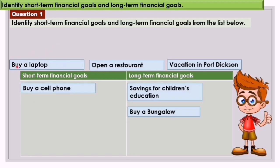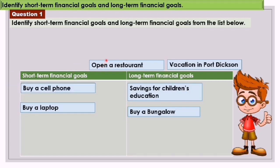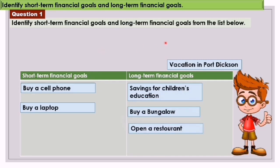Buy a laptop — same as buying a cell phone, this is a short-term financial goal. Open a restaurant — this involves a lot of money and takes time, so this is a long-term financial goal. Vacation in Port Dixon — this is a short-term financial goal and may take less than one year to achieve.